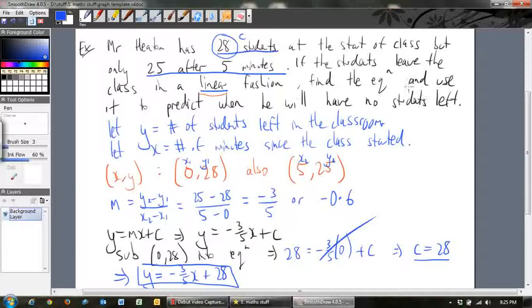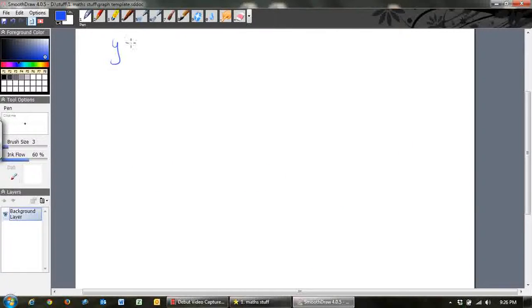We're not done yet. We're supposed to find the equation, but we want to use this equation, so we're modelling this situation. We want to use it to predict when Mr. Heaton will have no students left. What does that mean? We want the number of students to be equal to 0. So that is y. So I'm going to have to go to a new page, but what we're doing is we want y to be equal to 0. The number of students in the class to be equal to 0. What we want is we want to know when the number of students equals 0. In other words, we want to know when y is equal to 0.